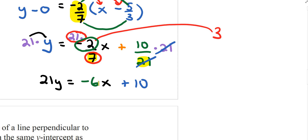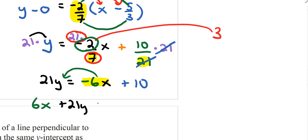Finally, take negative 6x and bring it to the other side. That becomes positive 6x, so the final answer is 6x plus 21y equals 10.